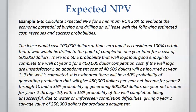After paying the $500,000 drilling costs, we reach the completion point. At this point there is a 60% probability that well logs are good enough to complete the well, which will cost $400,000, and a 40% probability of failure — the logs don't look good enough and we close the well and pay abandonment costs.